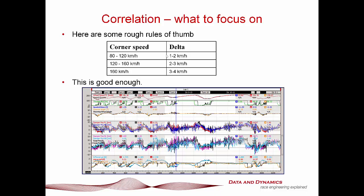In terms of correlation, this is good enough. This is an example of Chassis Sim versus an amateur driver with a little bit of talent. That correlation there, ladies and gentlemen, was more than sufficient for that team to make very good strides both in suspension geometry and in damper selection. So really, that's something I want you to take to heart.